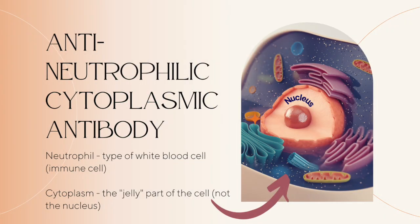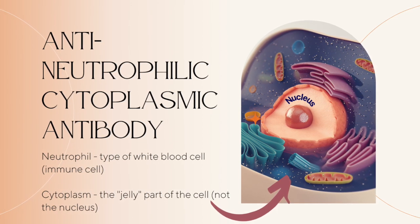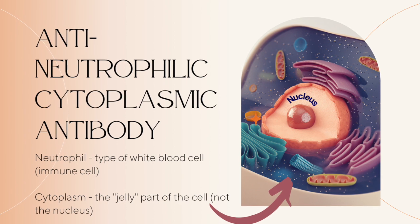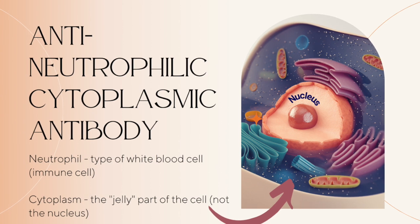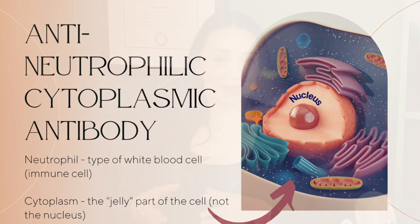All right, so let's just start with the basics. What is the ANCA antibody? ANCA is A-N-C-A — anti-neutrophil cytoplasmic antibody. If you just break down the word, it kind of tells you what it is. Neutrophil is a type of white blood cell, and white blood cells are the cells of our immune system. There are lots of different types of white blood cells, and neutrophil is one of those types.